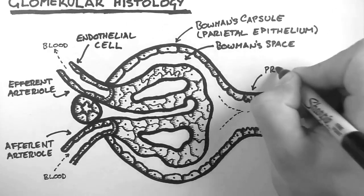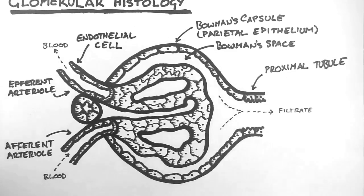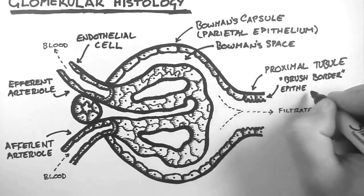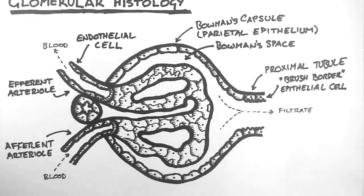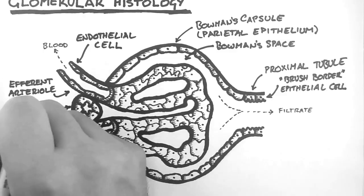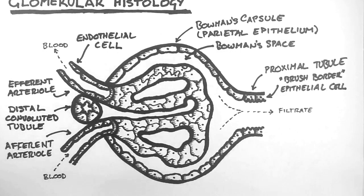This area here is the beginning of the proximal tubule, and it has these characteristic brush border epithelial cells, presumably to increase the surface area of the cells. This allows for greater reabsorption and secretion of solutes and water. Between the two arterioles is this distal convoluted tubule, which is rising up towards us at right angles with the plane of the page.